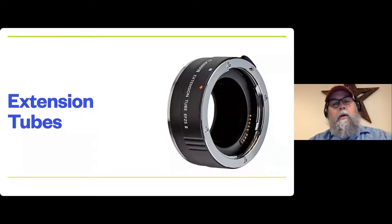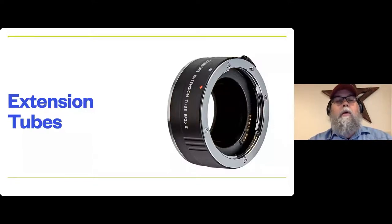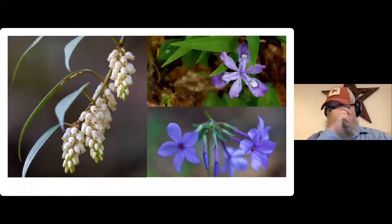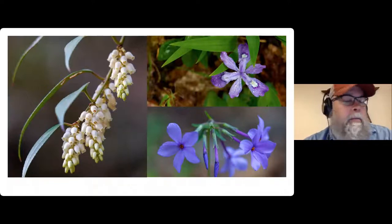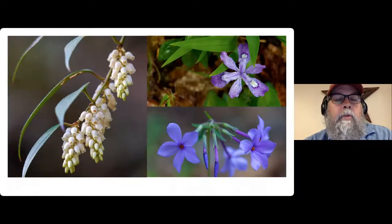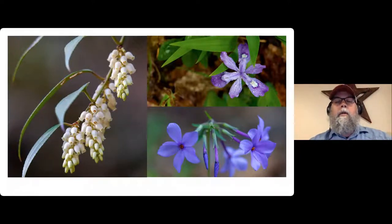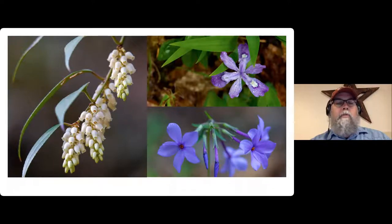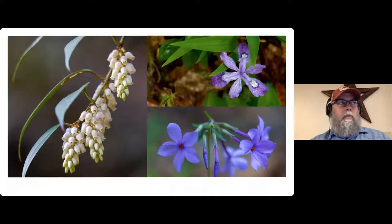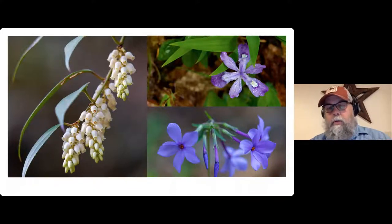I use my extension tubes a lot with a 70 to 200 millimeter lens. When you add that extension tube, instead of having a three meter close focusing distance, it'll be like an eight inch close focusing distance — essentially a cheap macro lens. Brenda clarified she meant extension tubes. The cool thing about the ones I use on my Canon cameras is you retain autofocus and all the functionality of your lens — they help your lens communicate with the camera to meter the light.